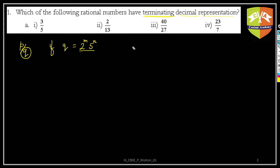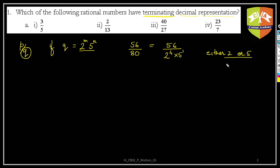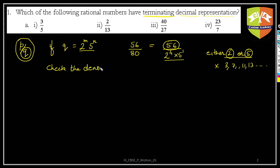For example, take 56/80. Only look at the denominator — prime factorize it. 80 is 2^4 × 5^1. The only prime factors appearing in the denominator are 2 or 5, nothing else. There can't be 3, 7, 11, or 13 — they are not allowed. If only 2 and 5 are in the denominator, then p/q will have a terminating decimal representation. It doesn't matter what is in the numerator — only check the denominator, then prime factorize it.